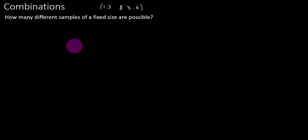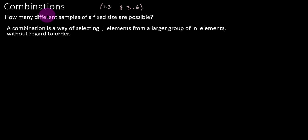And namely, what a combination accomplishes is it is a calculation to determine the number of samples that are possible from a larger group, say a population. An important point about that is that this is without regard to order.